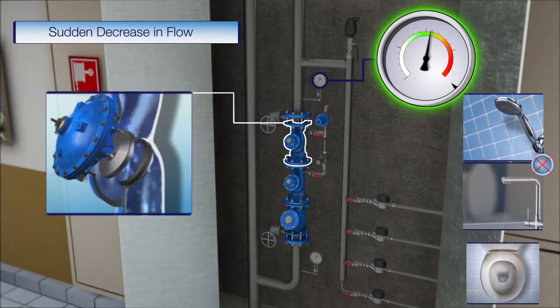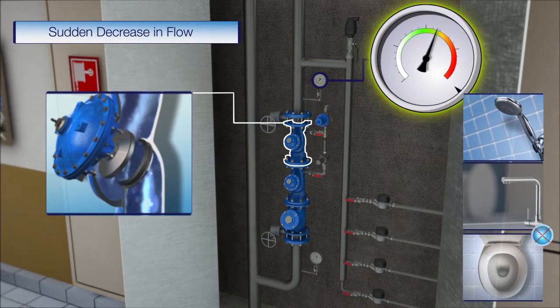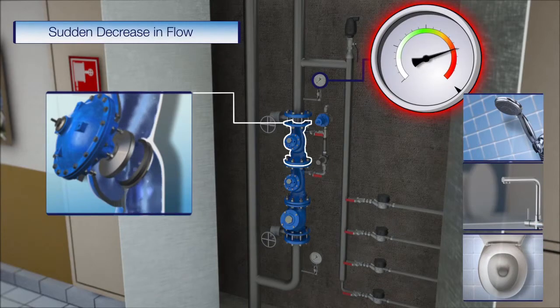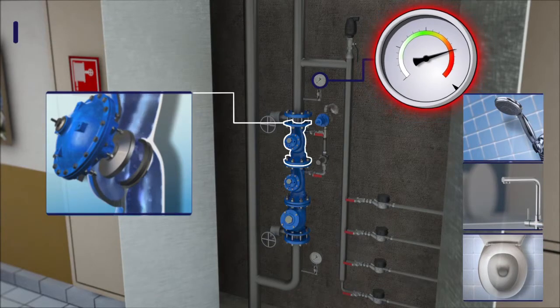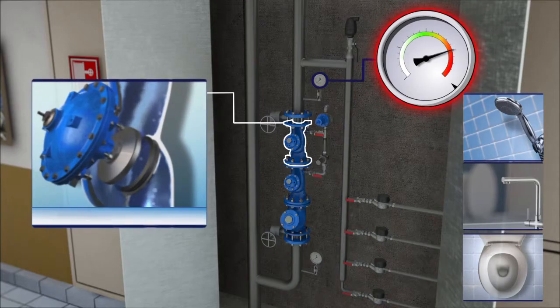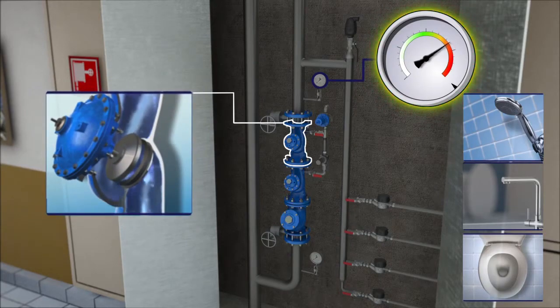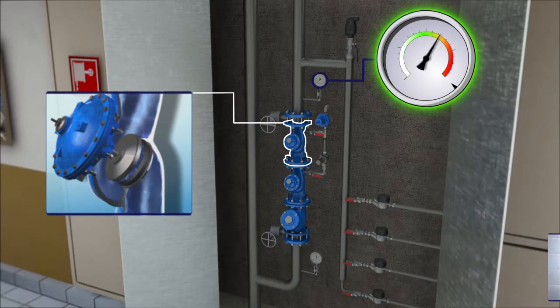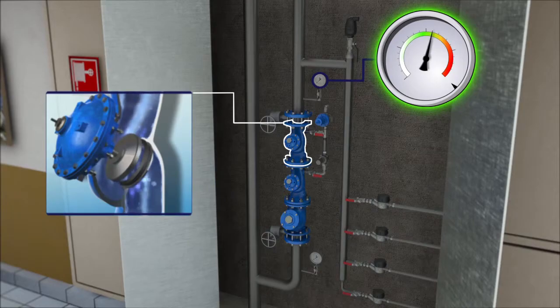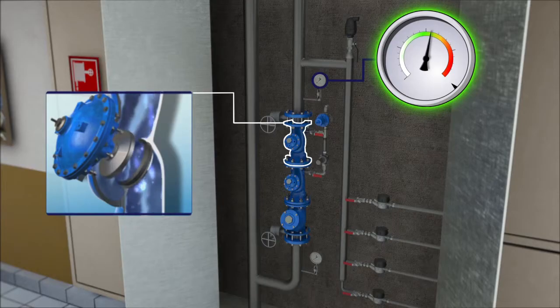When the demand for water suddenly drops, the downstream pressure rapidly rises beyond its safe setting. The emergency pressure relief valve opens its vent port for a short period, causing immediate reduction of the downstream pressure. The PRV regulates to its closed position, reduces the downstream pressure, and the system returns to safe operation setting.